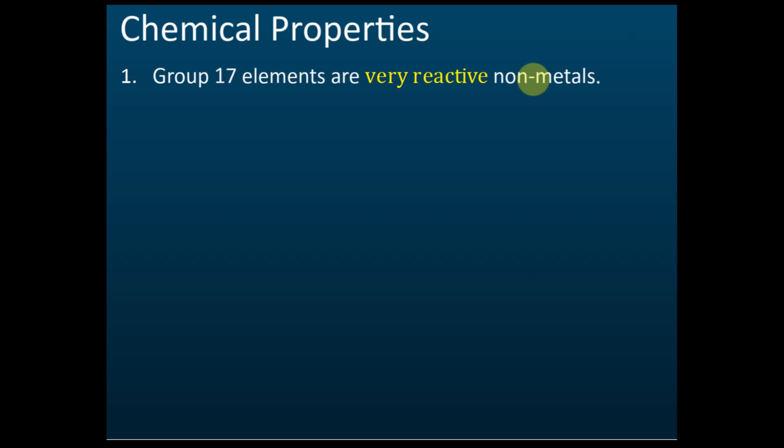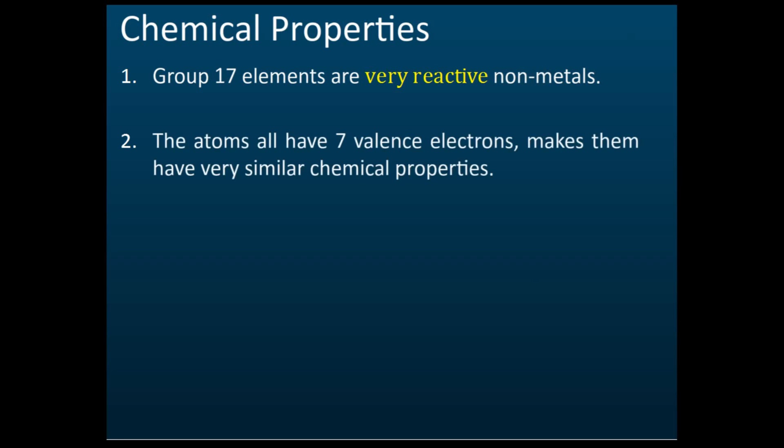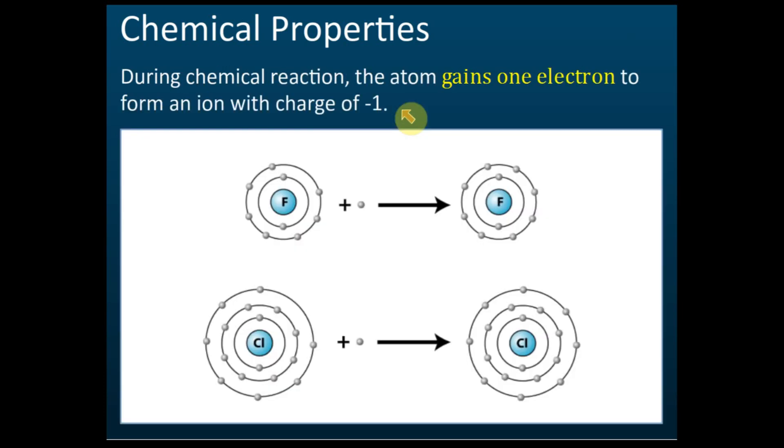Let's proceed to the chemical properties. Group 17 elements are very reactive — they are all very reactive nonmetals. The atoms all have seven valence electrons, which makes them have very similar chemical properties. Since they have the same number of valence electrons, chemically they are very similar.